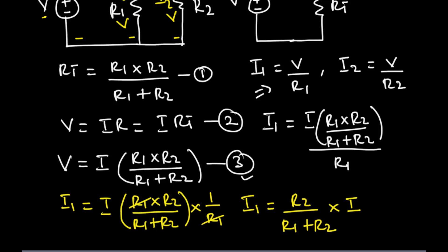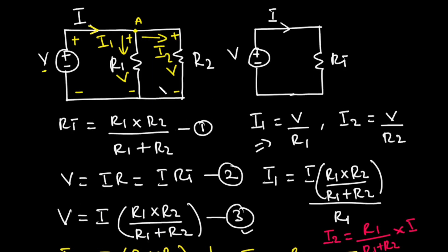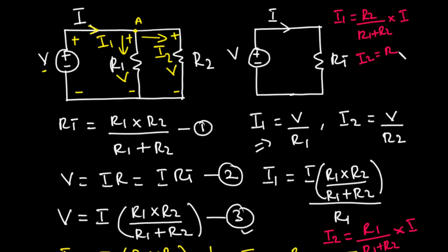Similarly, I2 = (R1 / (R1 + R2)) × I. In summary, for two resistors in parallel, the current through the first resistor equals the value of the second resistor divided by the sum of both resistors, multiplied by the total current. The current through the second resistor equals the value of the first resistor divided by the sum of both, multiplied by the total current. Now let's solve an example.